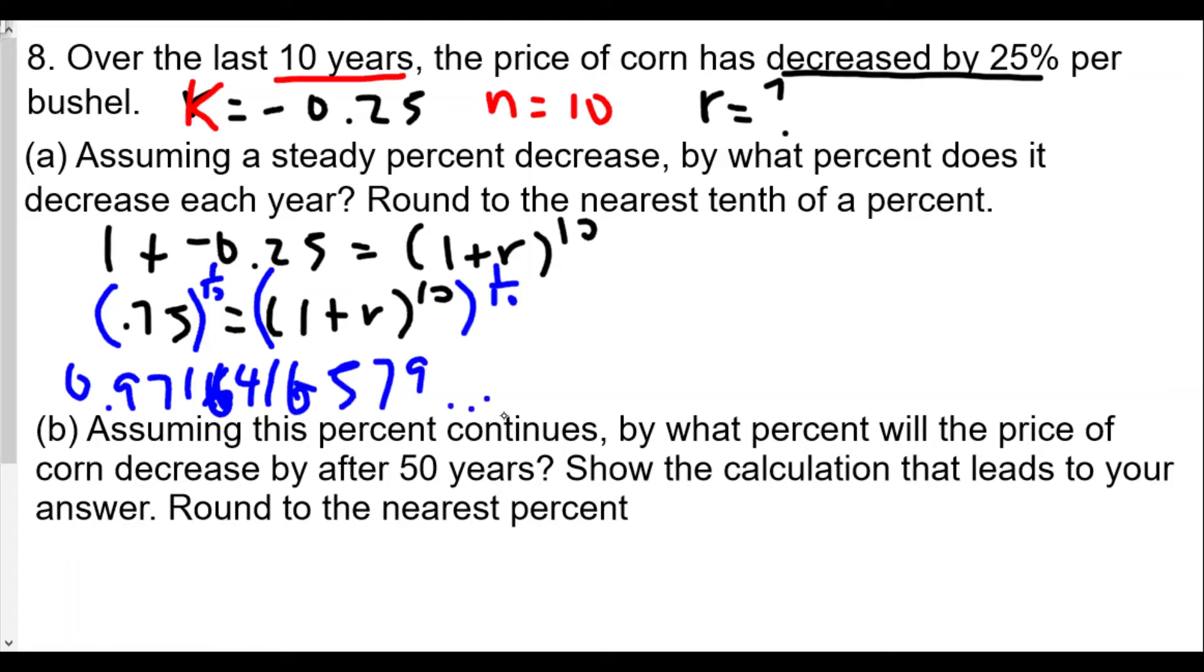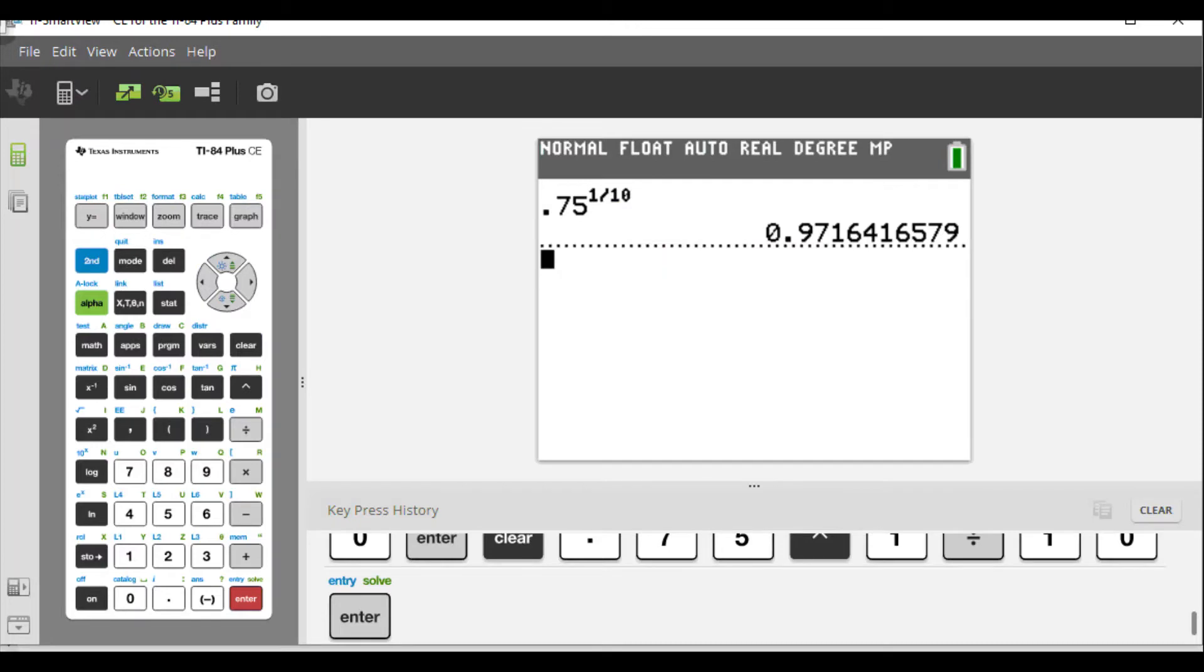So we have 0.9716416579 equals 1 plus r. Now we're going to take away 1 from both sides. We'll just use the graphing calculator - take this value, the answer minus 1.